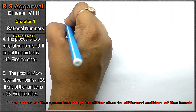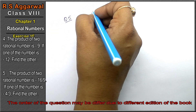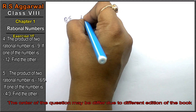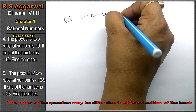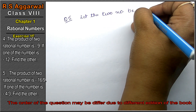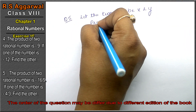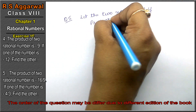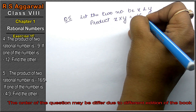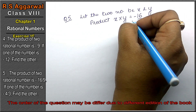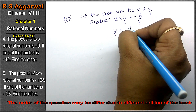Let's do question number 5 of Exercise 1E on rational numbers. The product of two numbers is -16/9. Let the two numbers be x and y. If one of the numbers, y, is -4/3, find the other number.